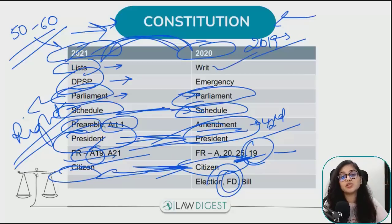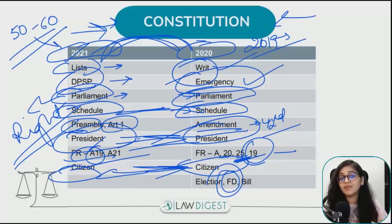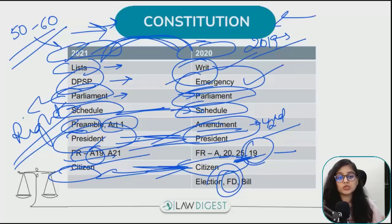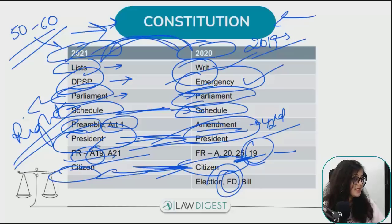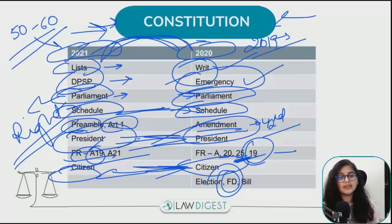2019 के broad pattern में भी ये सारे topics पूछे गए हैं - Fundamental Rights, Preamble amendment, Parliament, Emergency, Amendment, Attorney General, DPSP. So these are very important topics across years. I have already covered topics in my video on topics for DULLB - keep doing those topics and revise them.